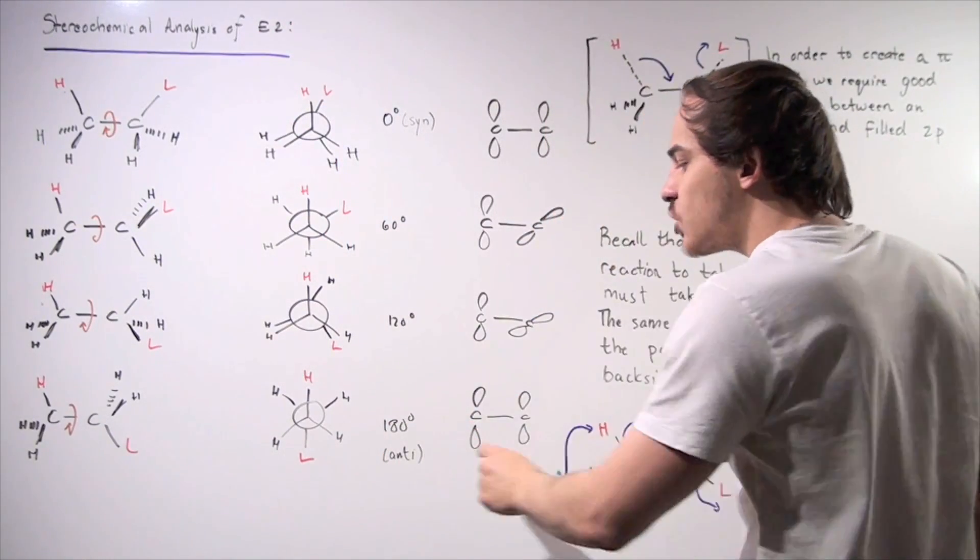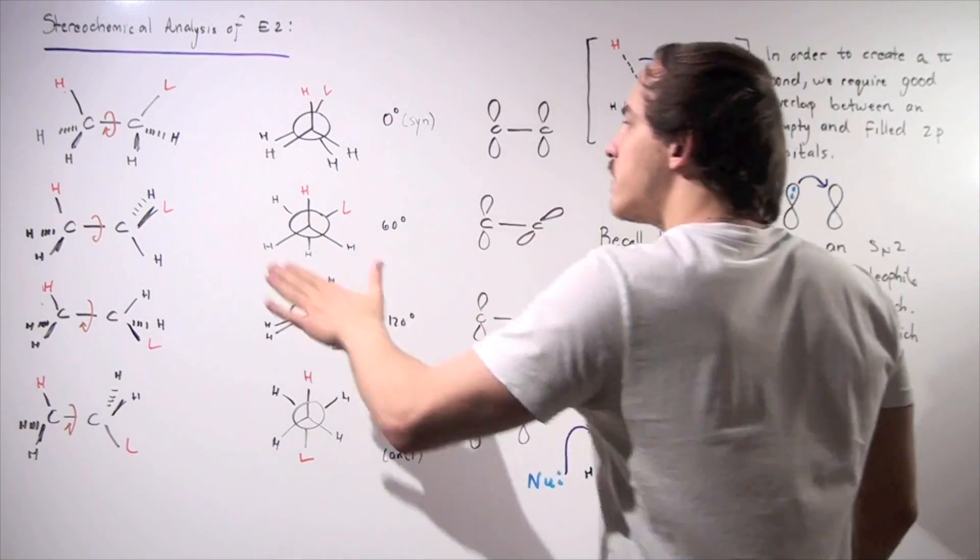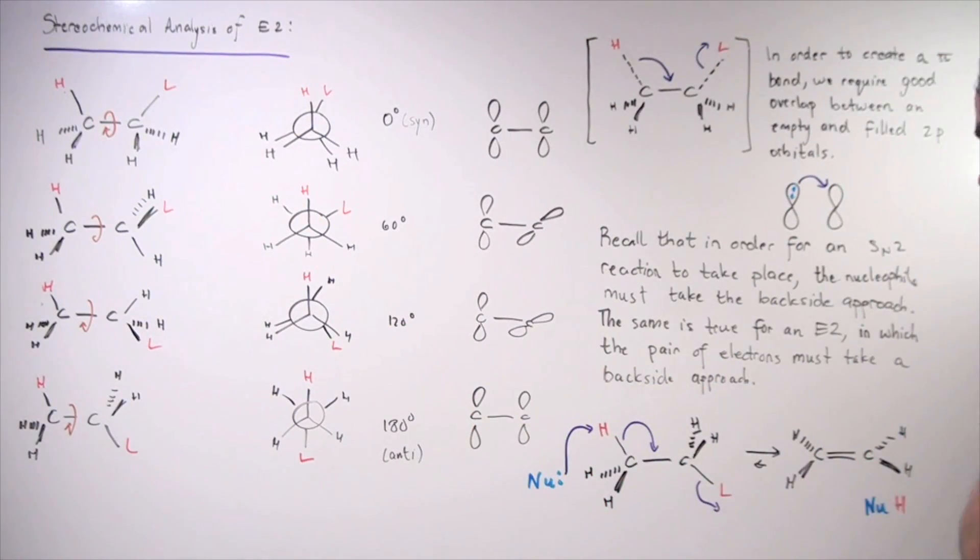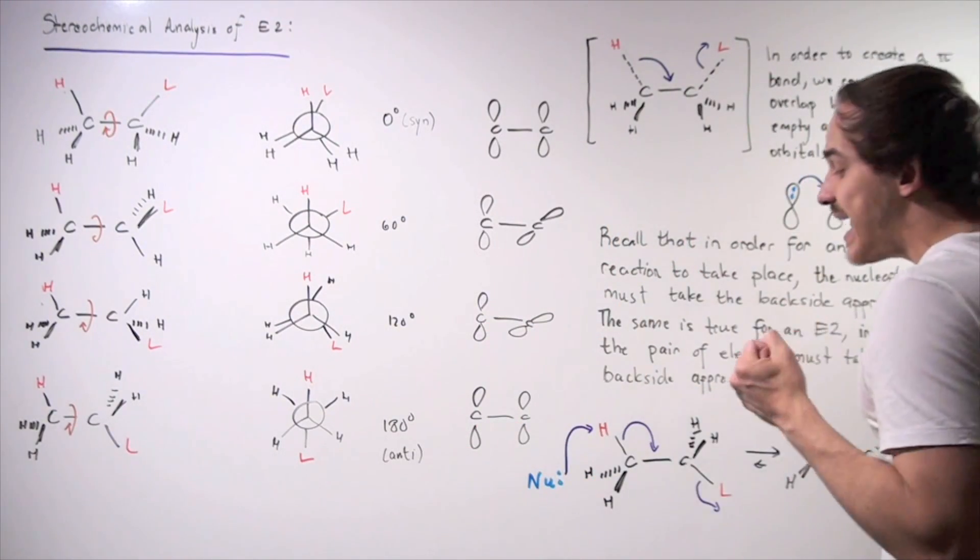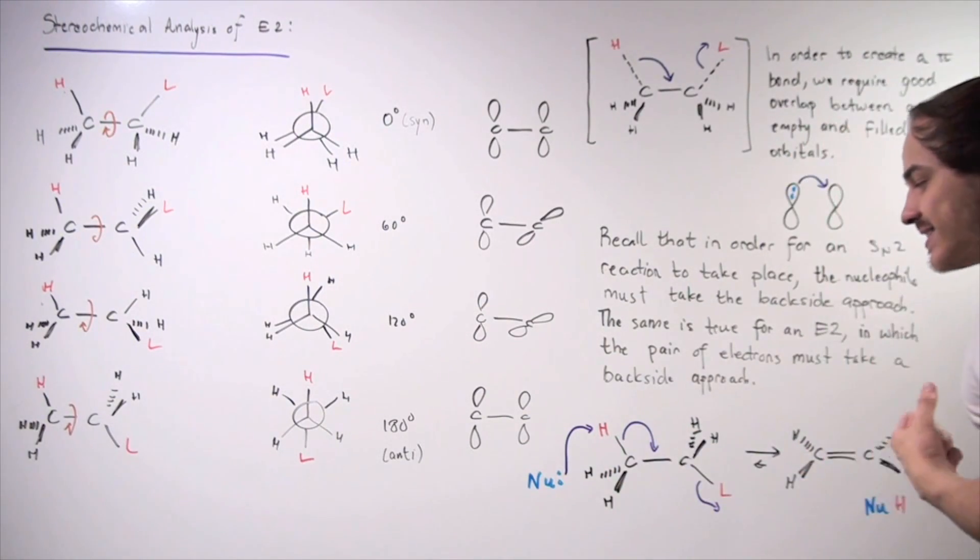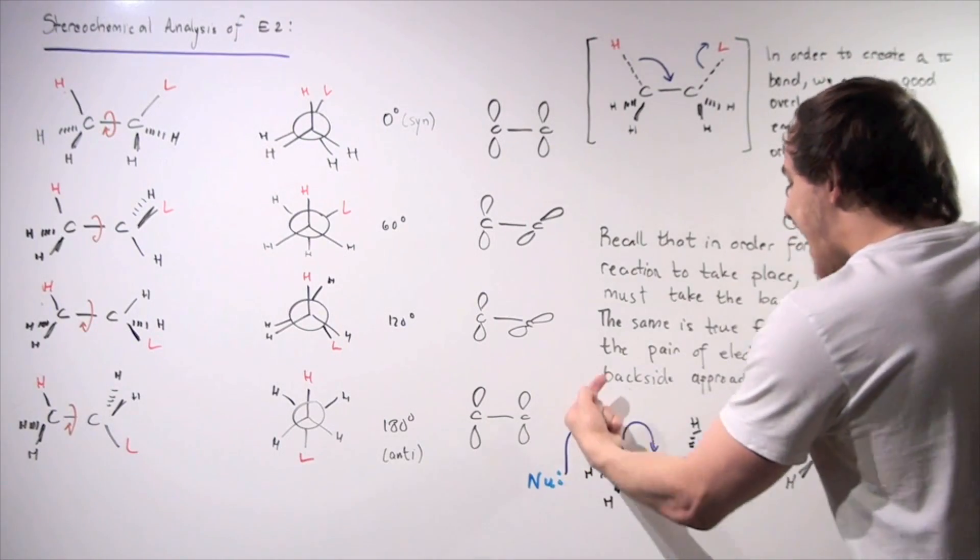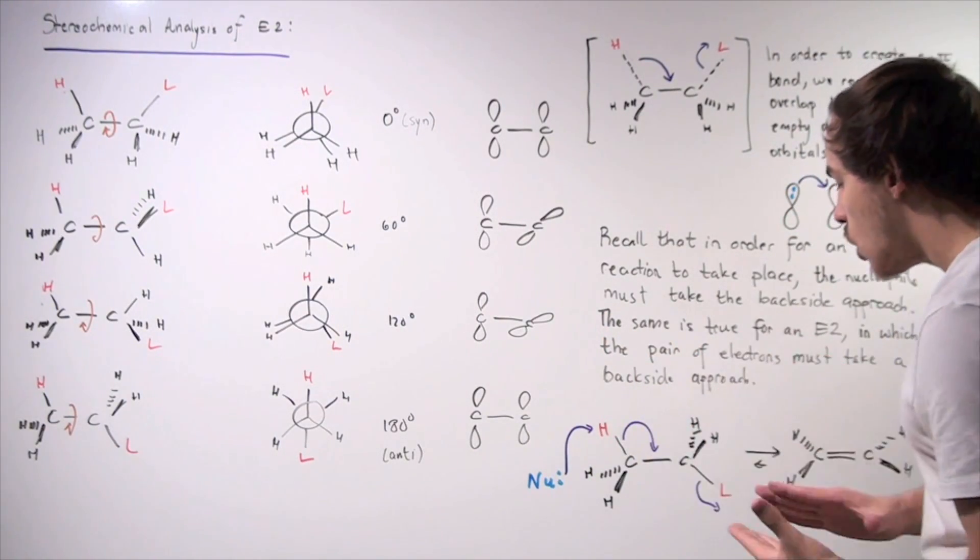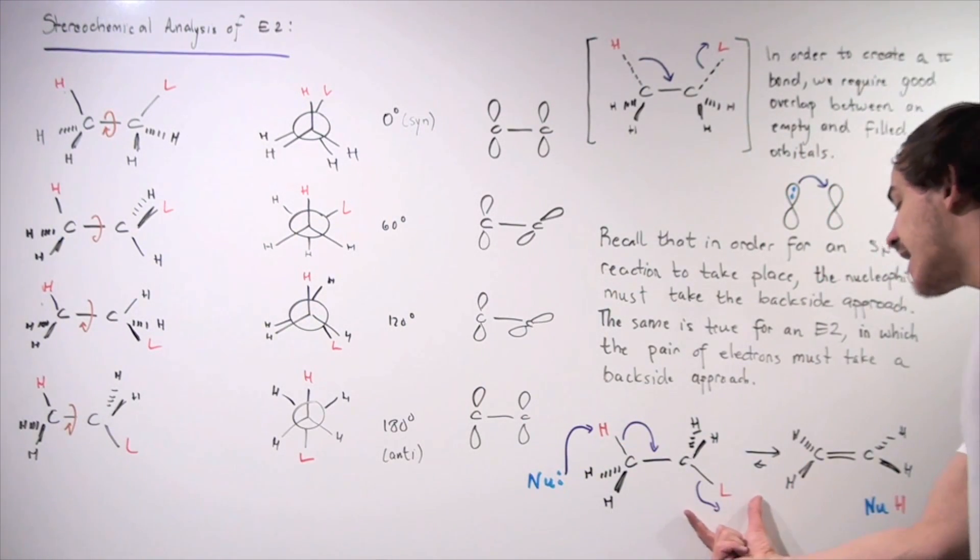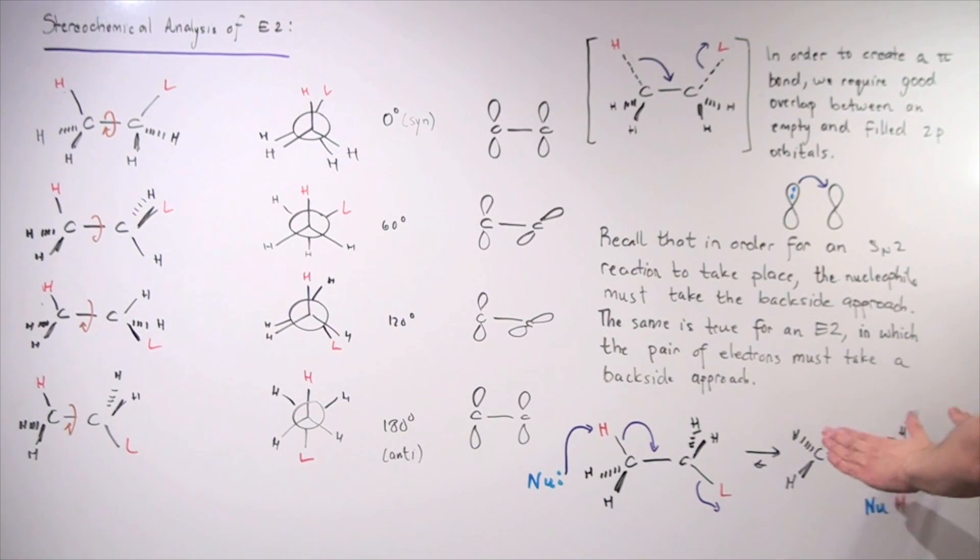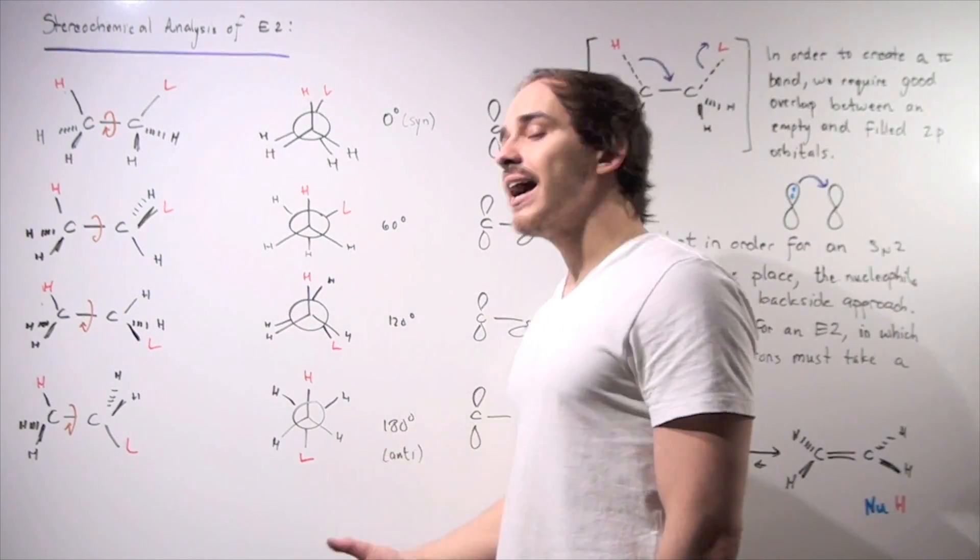So we require 180 degrees, or the anti-conformation of our alkane. So this is our mechanism in which our nucleophile, which acts as a base, uses its pair of electrons to take off the H atom. It takes off the H atom at the same time. This pair of electrons attacks this carbon via a backside approach, kicking off this pair of electrons, forming our following alkene and our N-U-H bond shown here. We're also going to have the anion, the leaving group, floating around. But this is our alkene, and this is the mechanism which must take place via an anti-180 degrees.